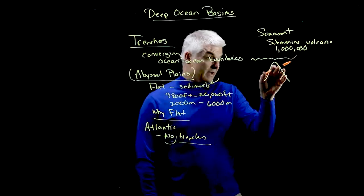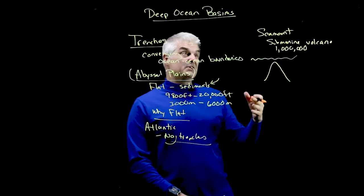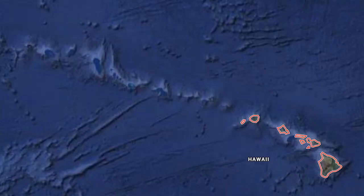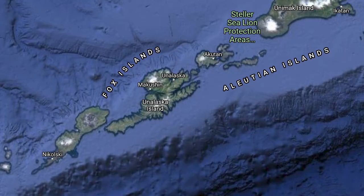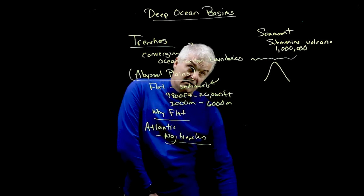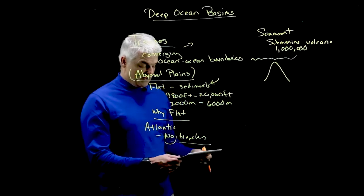Some seamounts do make it to the surface of the earth. One example would be the Hawaiian Islands. You've been to Hawaii on the beach, get that tan. Also the Aleutian Islands and the Azores. You can find seamounts lots of places. Some of the ones I've just listed are ones that do come to the surface of the earth.